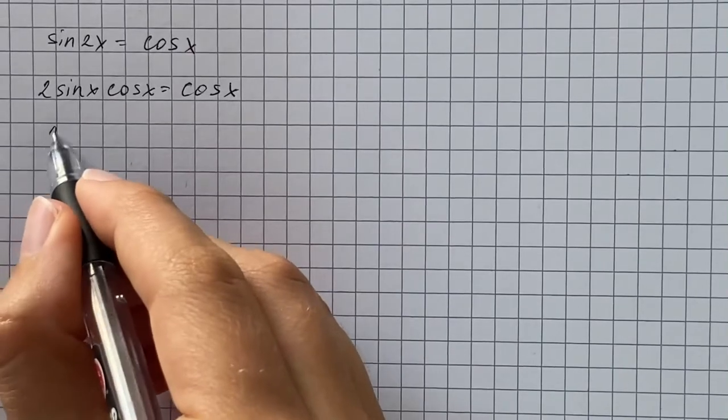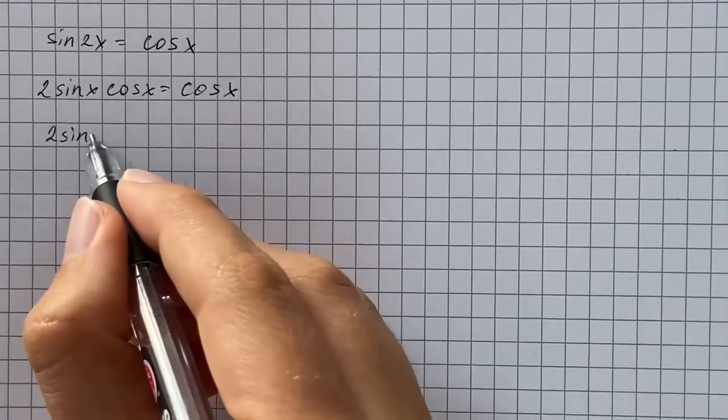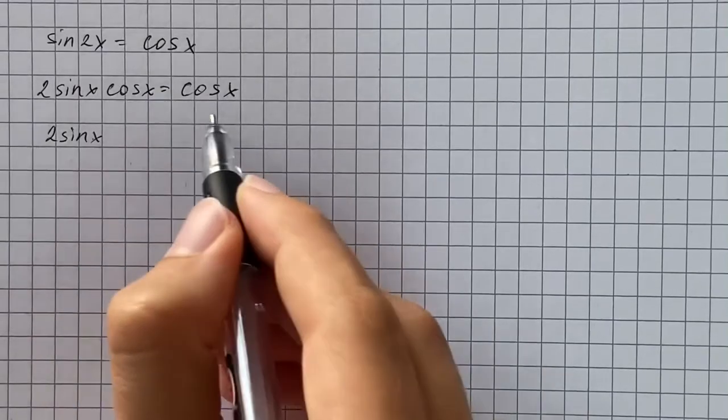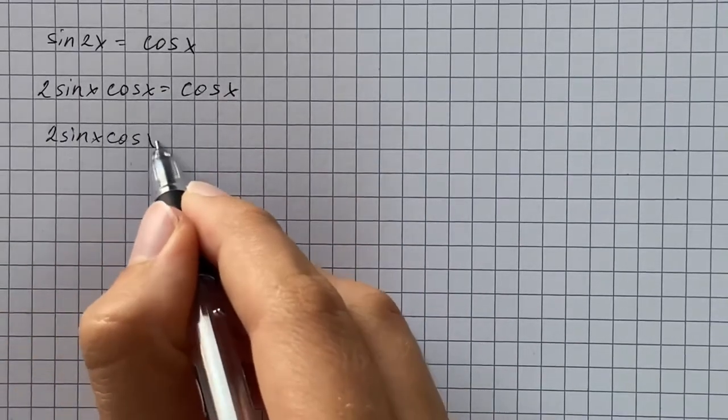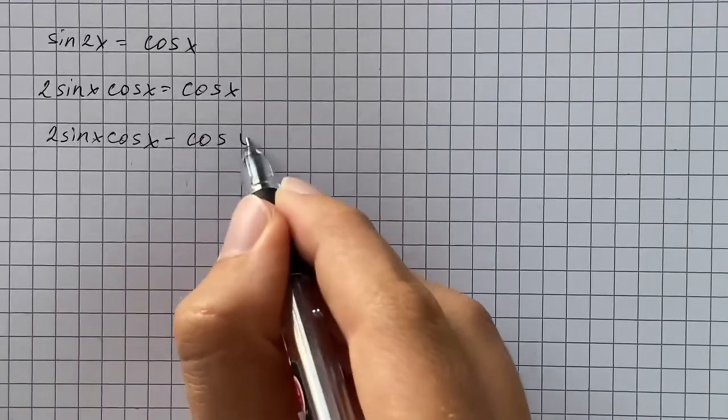So we're going to just make one of the sides equal to 0. So we subtract cosine of x from both sides and that's going to be 2 sine x times cosine of x minus cosine of x equals 0.